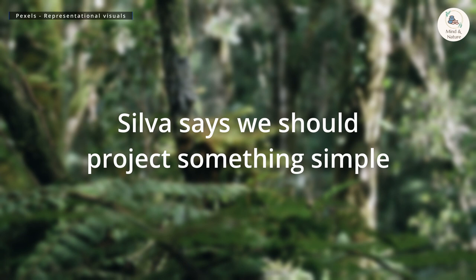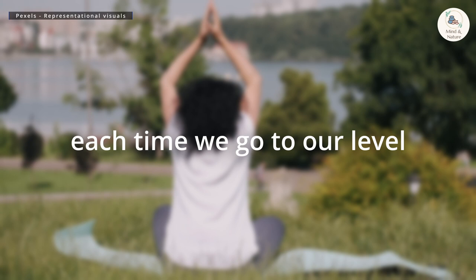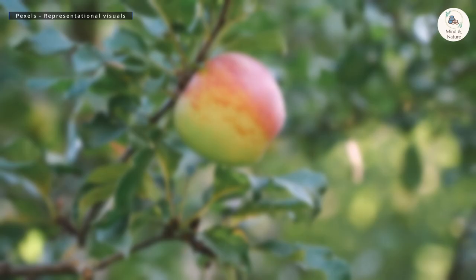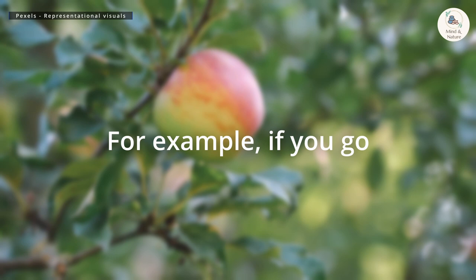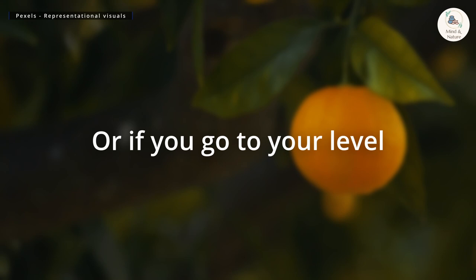To make the process easier, Silva says we should project something simple and something which we are familiar with, like an orange or an apple. In the beginning, each time we go to a level, we should stay with just one image. For example, if you go to your level with an apple, just stay with an apple. Or if you go to your level and visualize an orange, just stay with the orange.